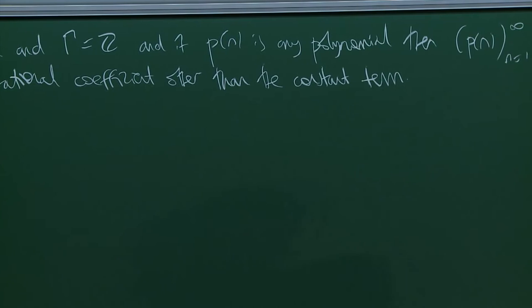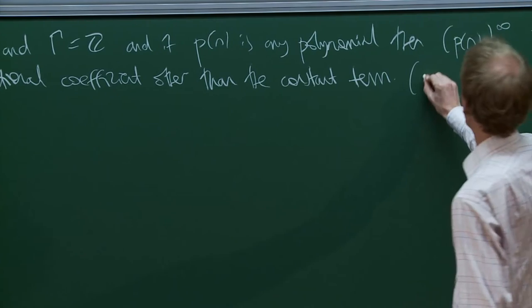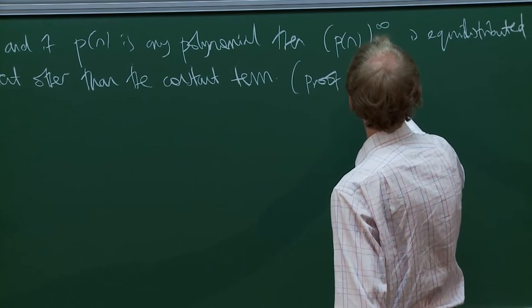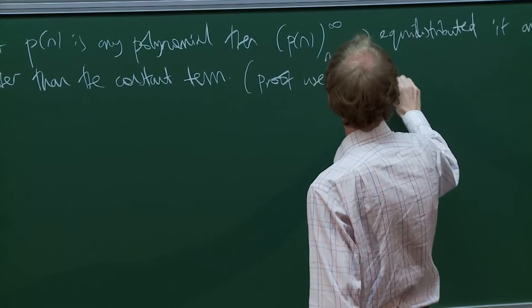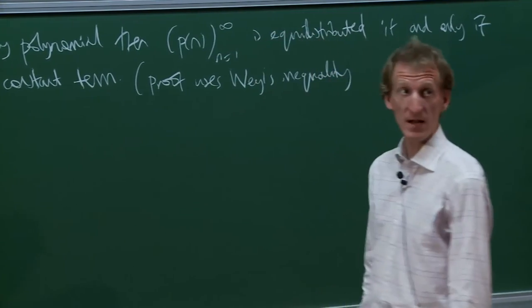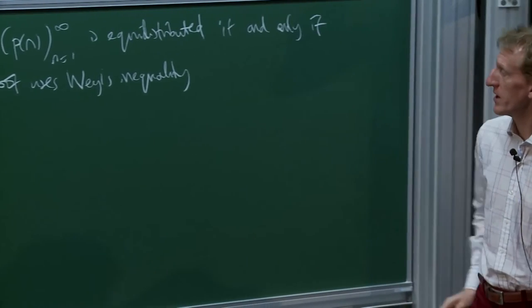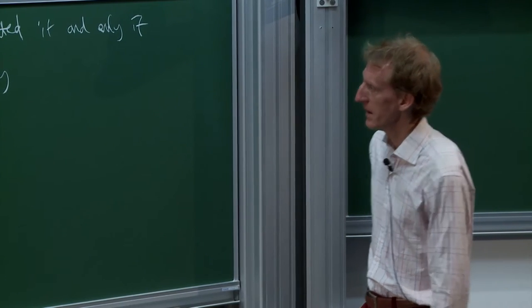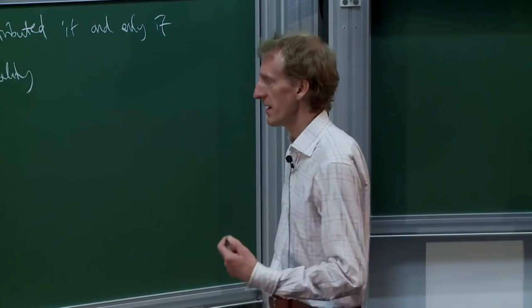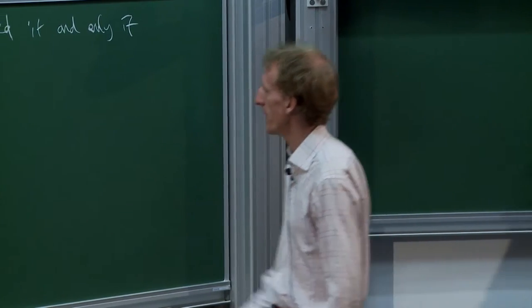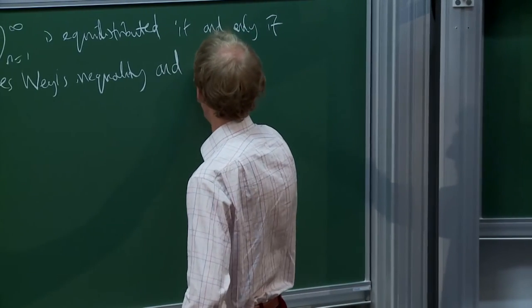This is not so trivial to prove. The proof uses Weyl's inequality, which I will mention later. Weyl's inequality tells you that if the polynomial is not equidistributed then the lead coefficient is rational, and then you iterate down to show that all of the other coefficients are rational as well.